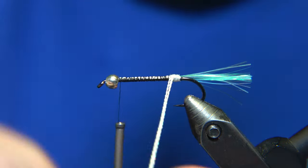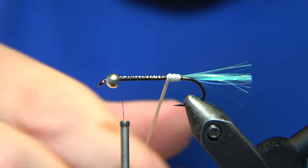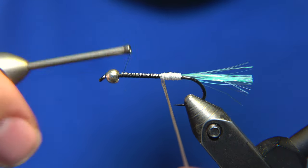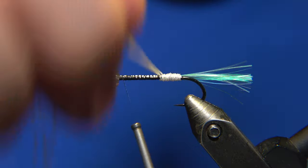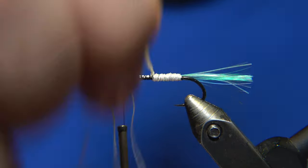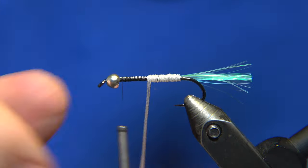What was surprising to me is the fact that the DMC yarn is actually UV reflecting. You will see that when we do the head of the fly.